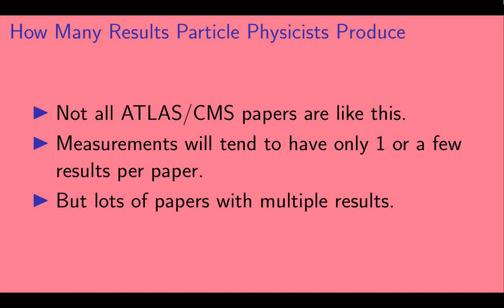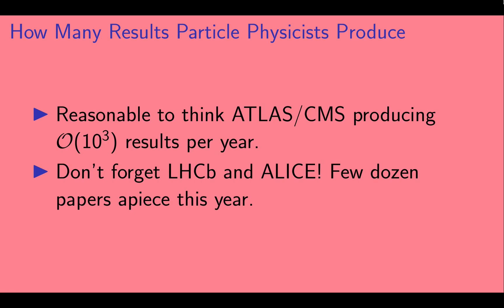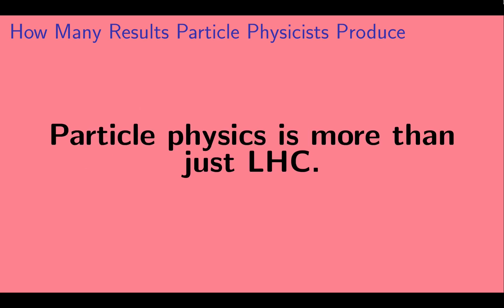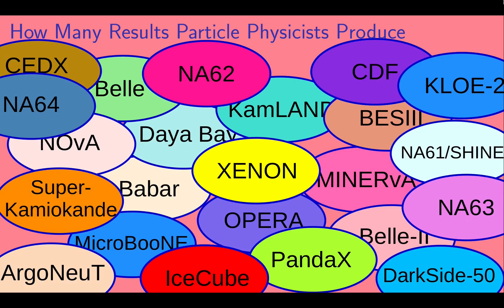Now, not all ATLAS and CMS papers are like this. Papers whose focus is on measuring parameters instead of looking for new particles will tend to have only one or a few results per paper. But there are loads of papers with multiple results. So it's reasonable to think that ATLAS and CMS are producing at least of order 1,000 measurements per year. And also, don't forget the other two major experiments at LHC, LHC-B and ALICE. They each have produced a few dozen papers this year. And let's not forget, particle physics is more than just LHC. Here is a goofy cartoon listing a bunch of particle physics experiments. Each of these experiments produced at least one physics paper this year. And some did dozens. And this is definitely not an exhaustive list. So there are lots of experiments actively producing results.